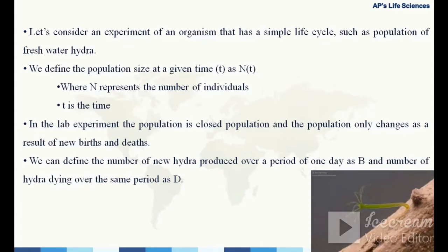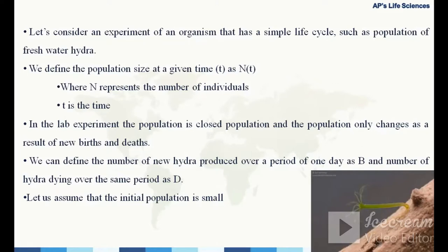We can define the number of new hydra produced over one day as b, and the number of hydra dying over the same period as d. We assume the initial population is very small: N0 equals 100, where zero refers to the time at the beginning.